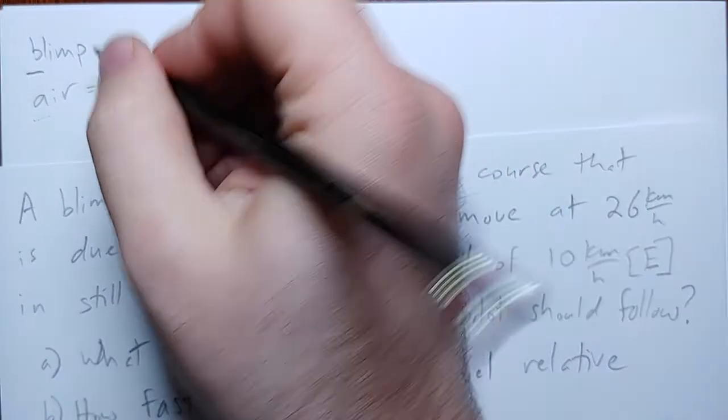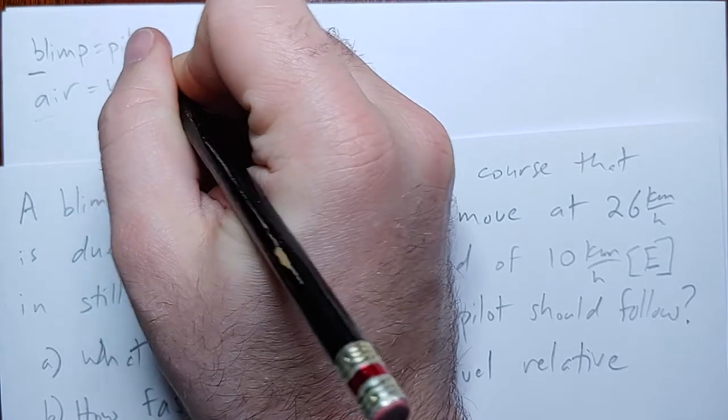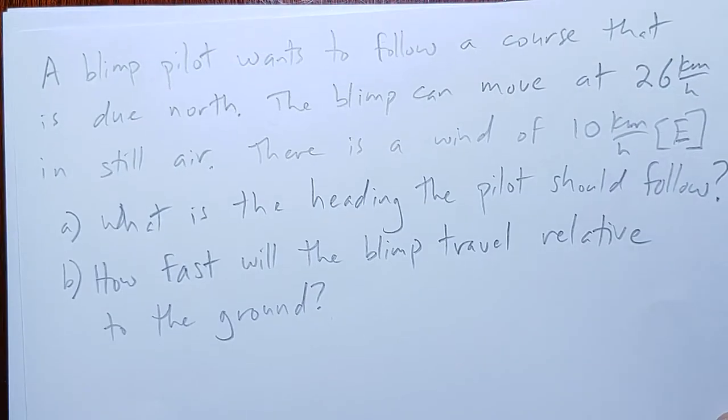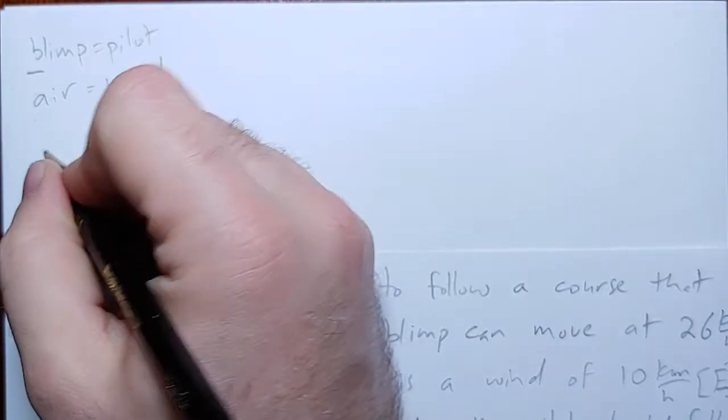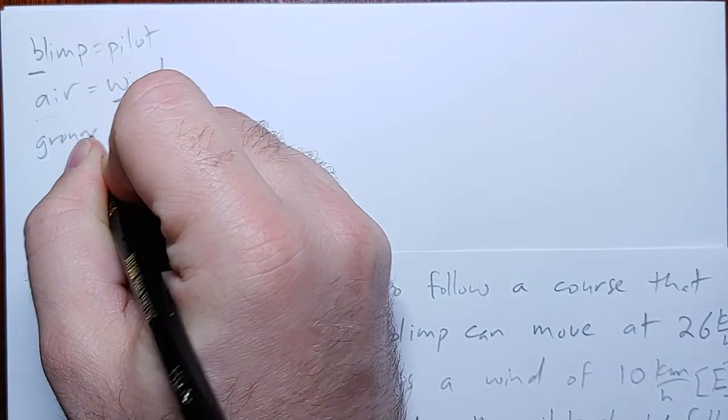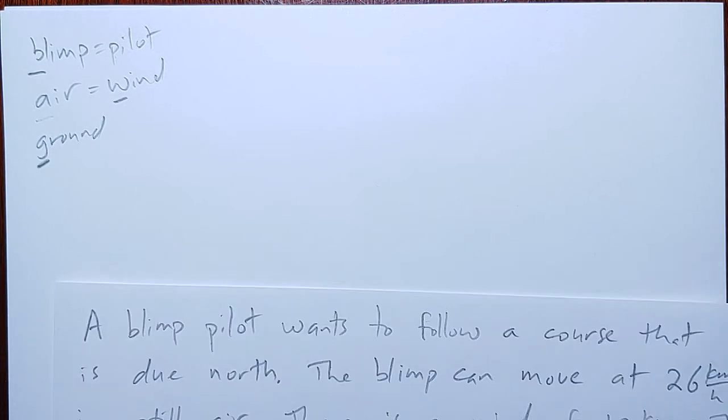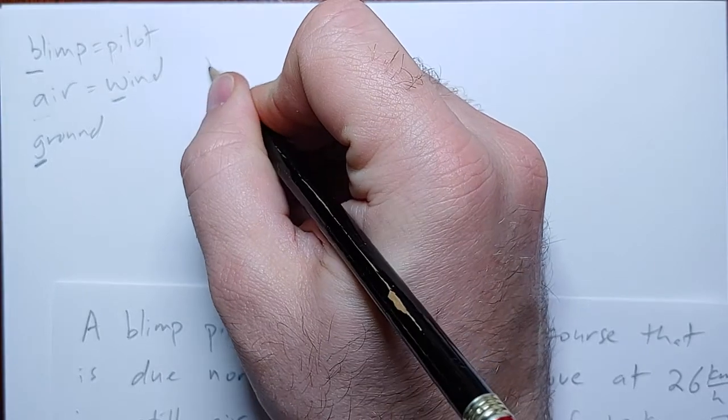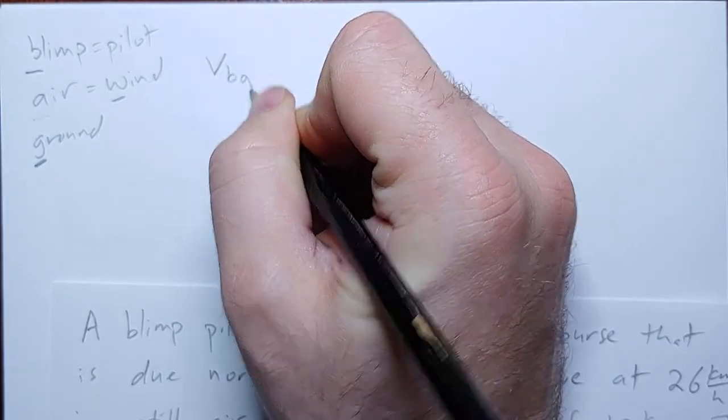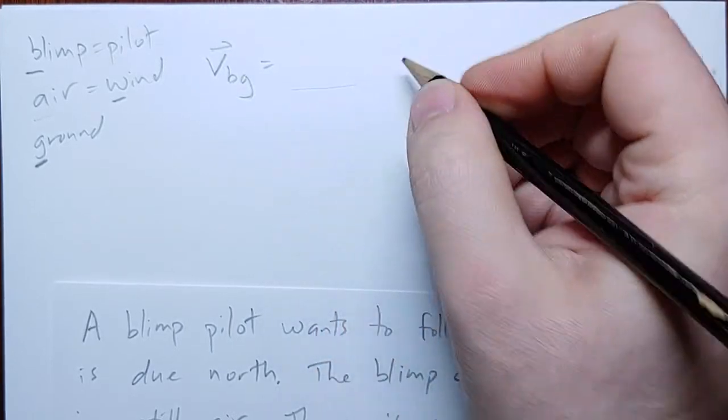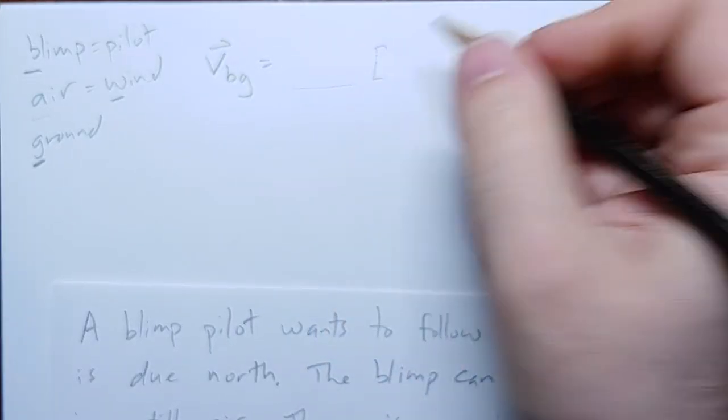And we've got the pilot, who, of course, is in the blimp. And how fast will the blimp travel relative to the ground? Okay, so the ground. Cool. So, we've got our three things. A blimp wants to follow a course. So, the course is the direction something moves compared to the ground. And so, the blimp compared to the ground. We don't know this yet.